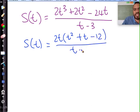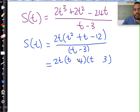Which means you can further factor this into 2t into what? Factors of 12 you subtract to give you 1 which is what? 3 and 4: t plus 4, t minus 3 over t minus 3.